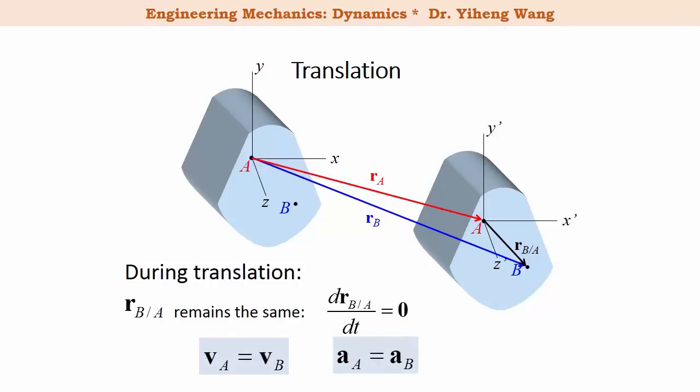You can also say that during translation all the particles in the rigid body will always move at the same velocity, same acceleration at all times.